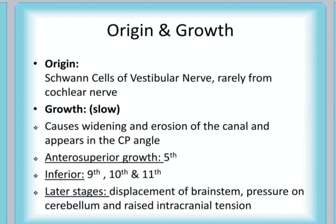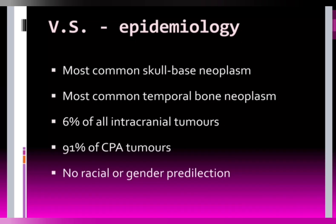It usually originates from the 8th nerve in the internal auditory canal, and as it grows it expands to involve other nerves such as the 5th, 9th, 10th, and 11th nerve, and that of the brainstem and the cerebellum. It is the most common tumour of the skull base, the most common temporal bone neoplasm, and it comprises more than 90% of CP angle tumours.